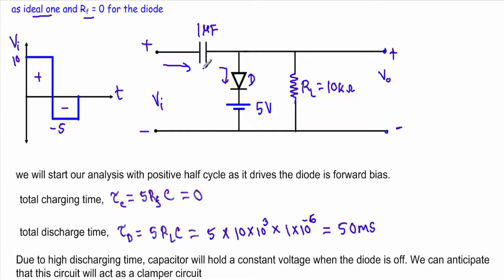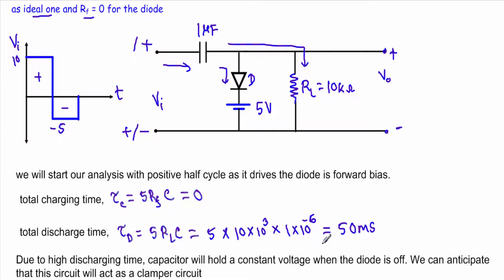When the diode is in forward bias, our capacitor will be charged. To calculate the charging time: tau_c = 5 × R_F × C. Since R_F equals zero, our total charging time will be equal to zero — that means the capacitor will charge up instantly. For the total discharging time when the diode is in reverse bias during the negative cycle, the capacitor will discharge through the load resistor RL. Tau_d = 5 × RL × C = 5 × 10 × 10³ × 1 × 10⁻⁶ = 50 milliseconds. We have a high discharging time compared to the very low charging time, so I can conclude the capacitor will hold its voltage and this circuit will act as a clamp circuit.